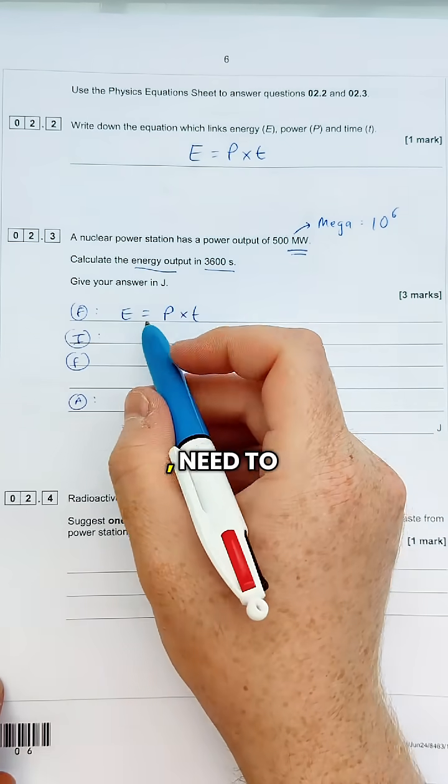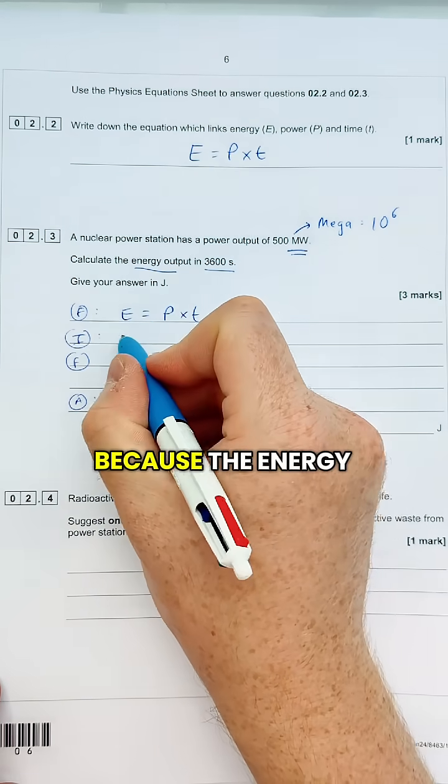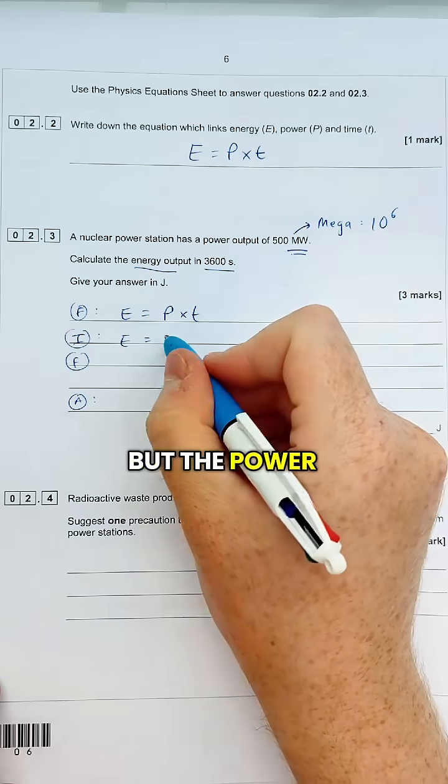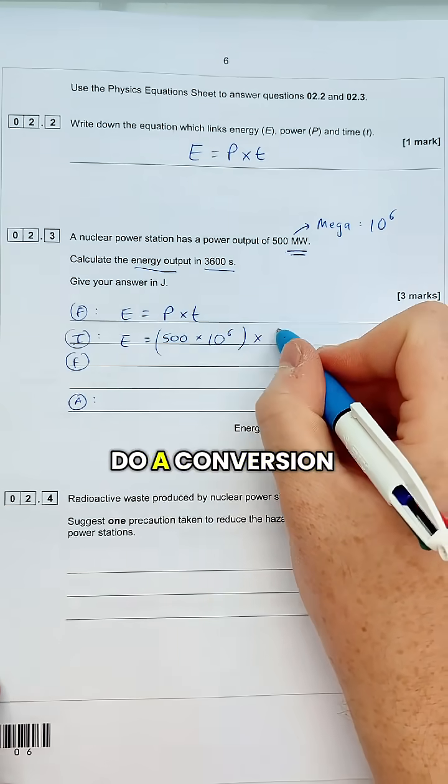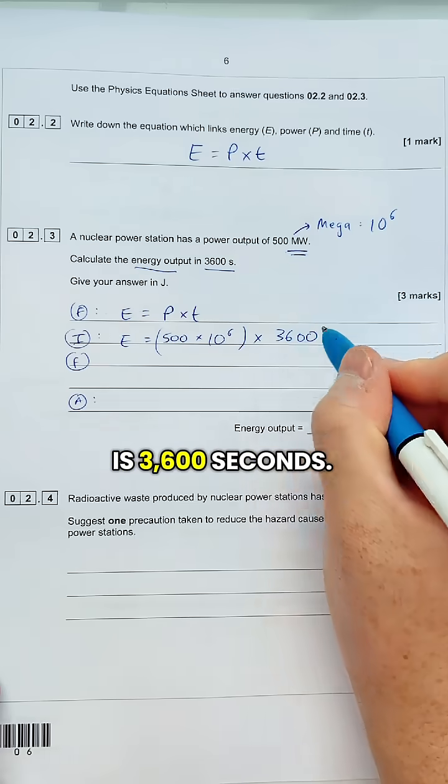Now we don't need to do too many calculations here because energy is what we're trying to find, but the power is 500 million watts and the time is 3,600 seconds.